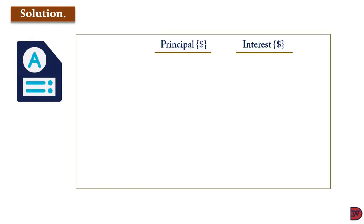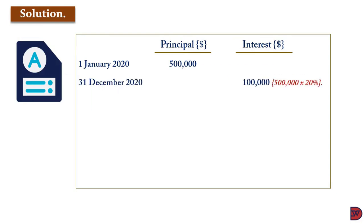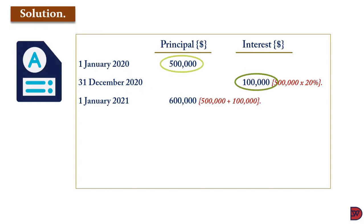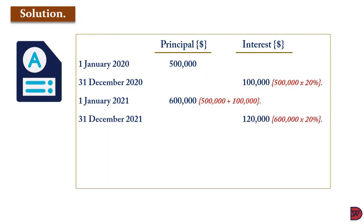The principal as of 1st January 2020 is $500,000. No interest has been earned at that point. On 31st December 2020, the interest will be $100,000 — 20% on $500,000 with no prior interest. The new principal at the beginning of 2021 becomes $600,000. The interest a year after, on 31st December 2021, will be $120,000, which is 20% on the new principal of $600,000.